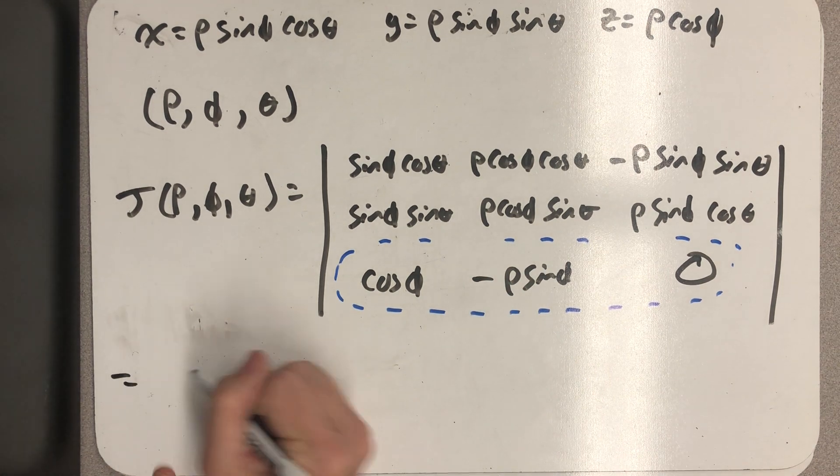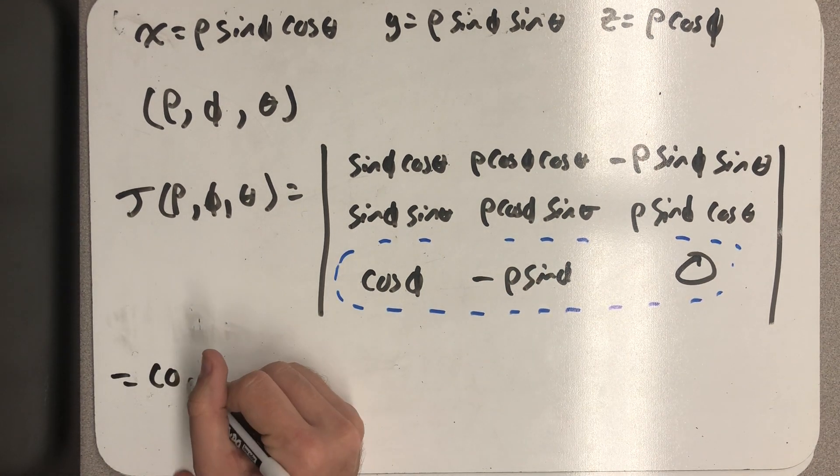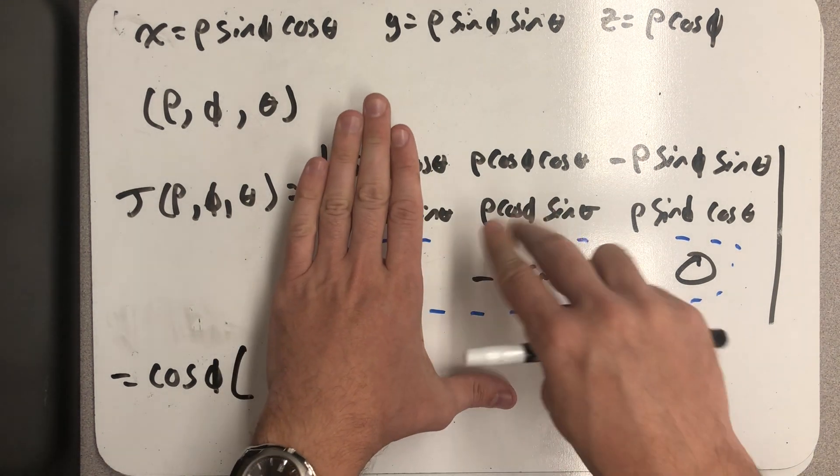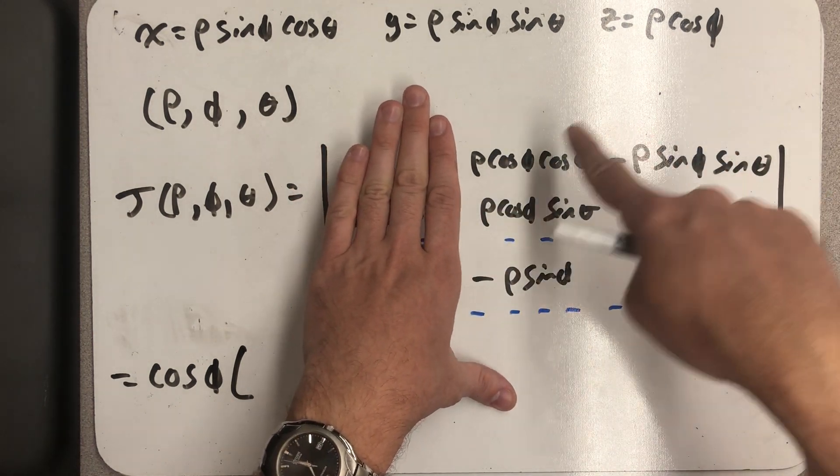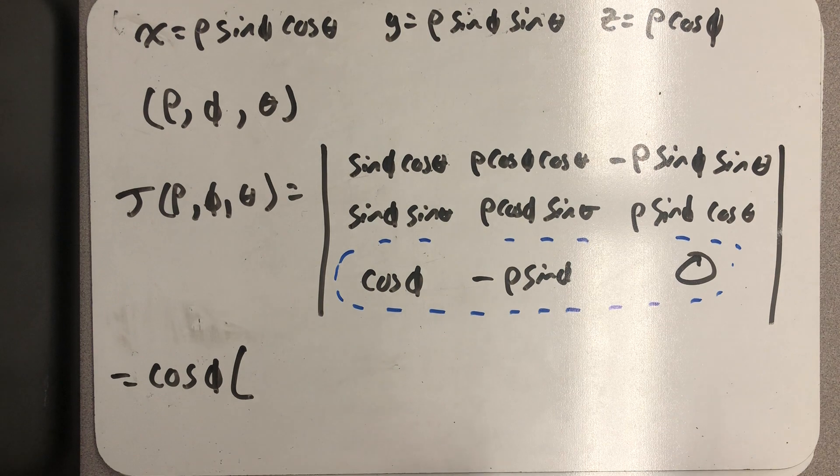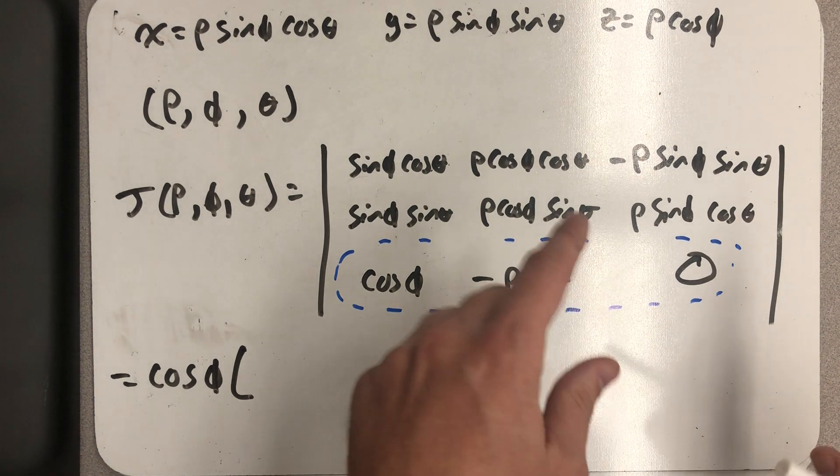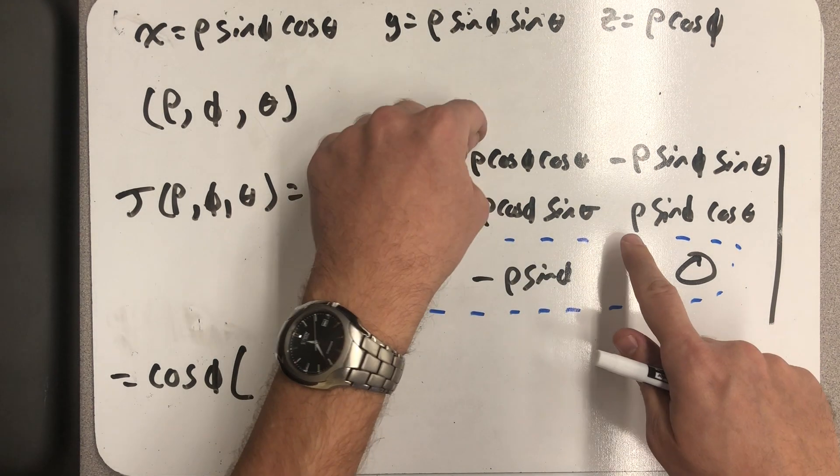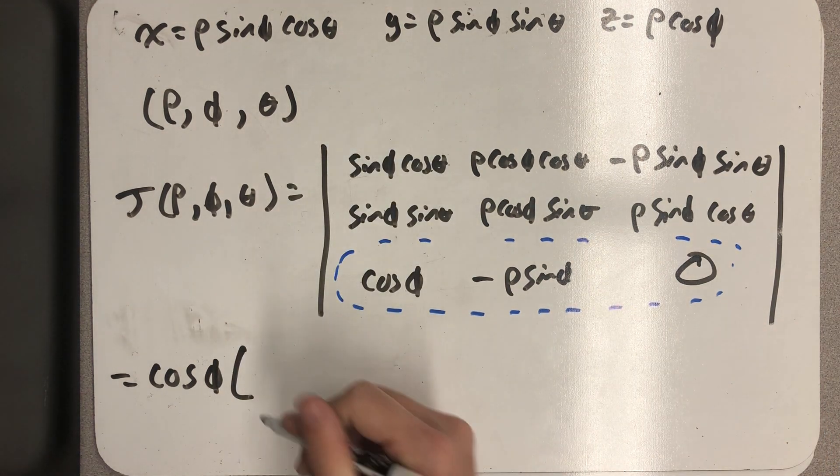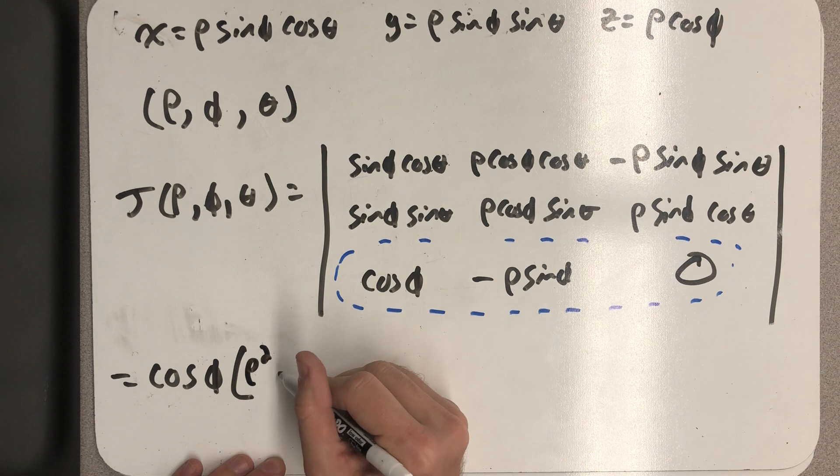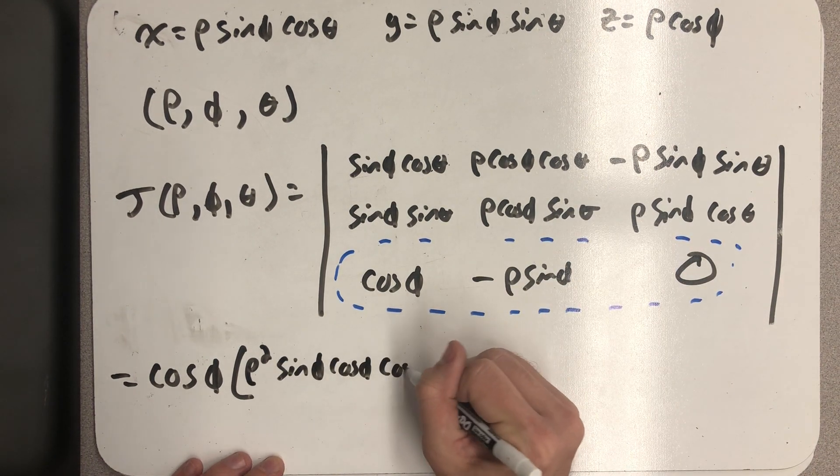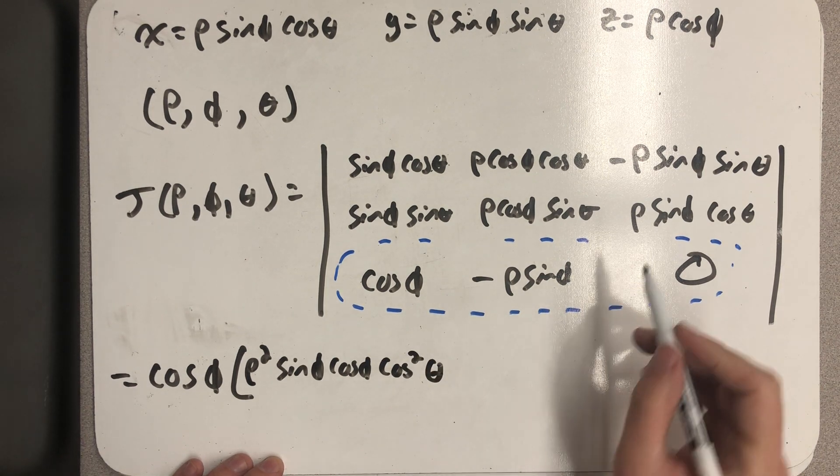So to expand over the last row, I have cosine of phi times, and now I need to take the determinant of the two by two of the little matrix up here in the top right hand corner. And so I need to be careful with all of my terms here and make sure I don't lose anything, a sine or a trig function or a rho. And so I multiply these together, I'm definitely going to get a rho squared, I will have a sine phi and a cosine phi, and a cosine squared theta.